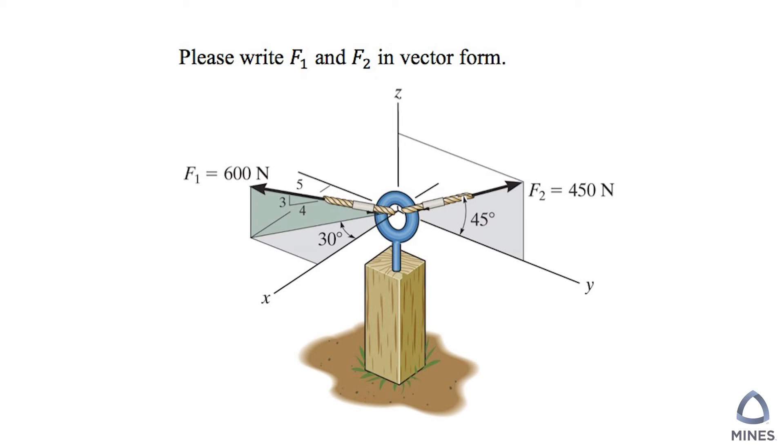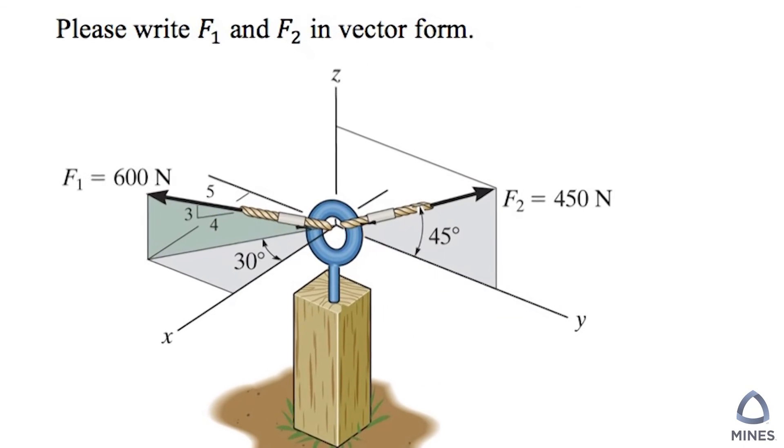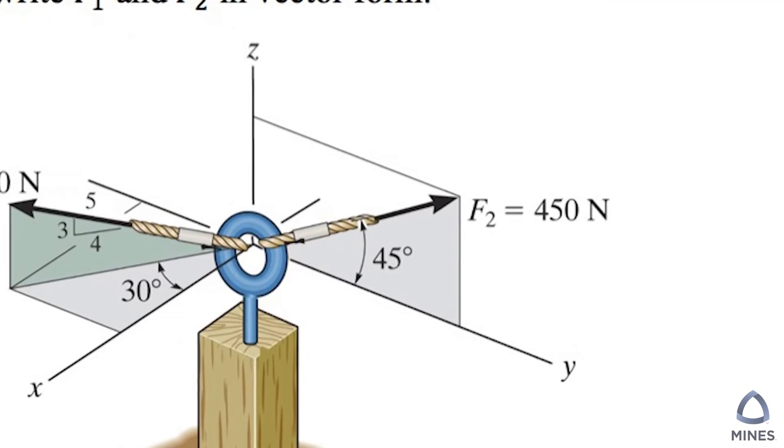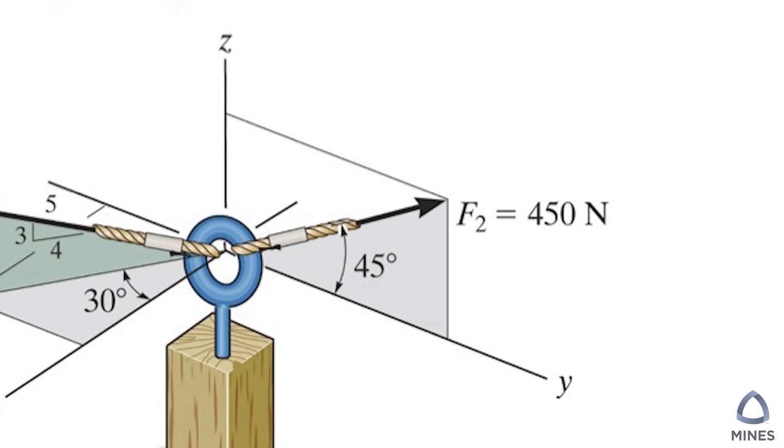So now let's take a look. If we were trying to write the F2 in the vector form, are we going to do the double projection? Take a look at here. The F2 is actually in the YZ plane. So which means we had a zero i hat. And then what is the Y components of the F2 here? From the picture you can see that's going to be 450 multiplied cosine 45. And then what is the Z components? That's going to be this line here. So that's 450 sine 45, the k hat.